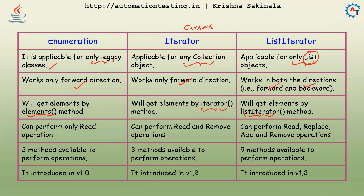With Enumeration we can perform only read operation. With Iterator we can perform read and remove operations. With ListIterator we can perform read, replace, add, and remove — four operations in total.